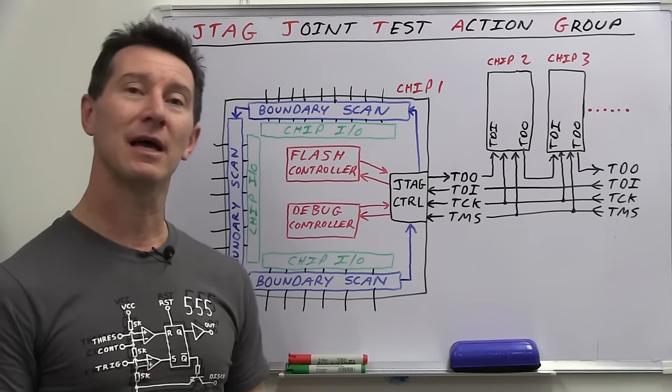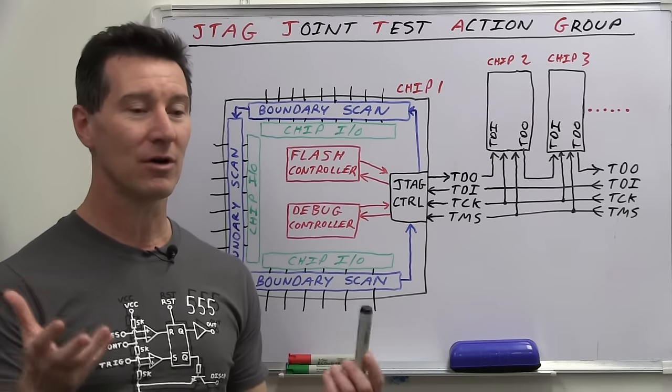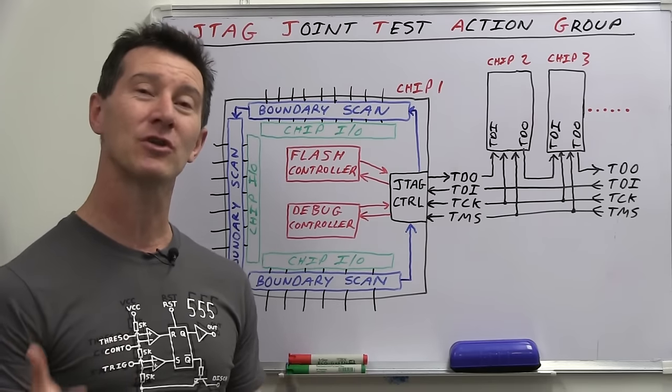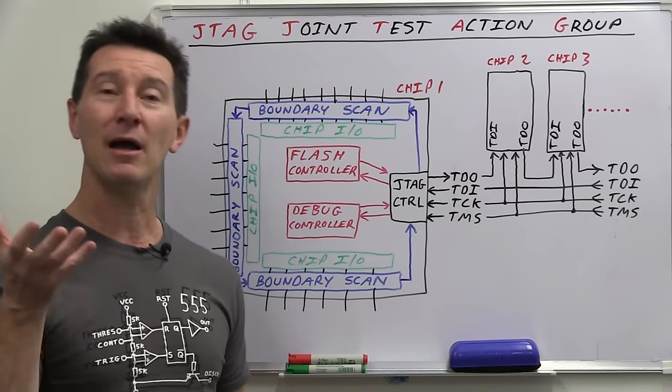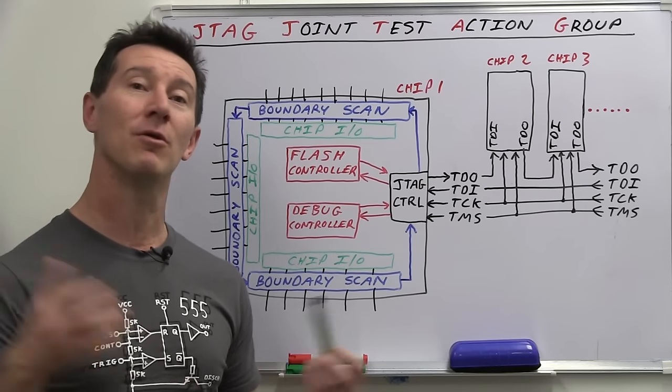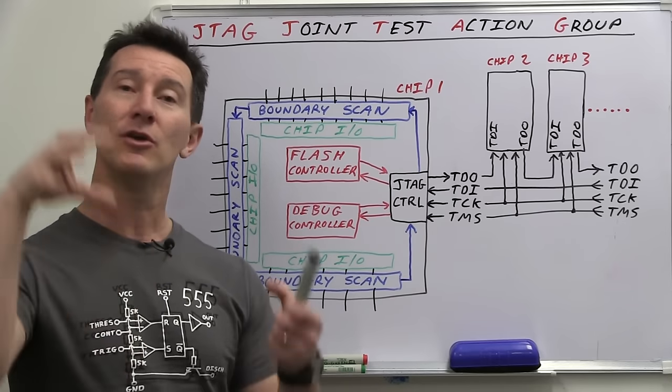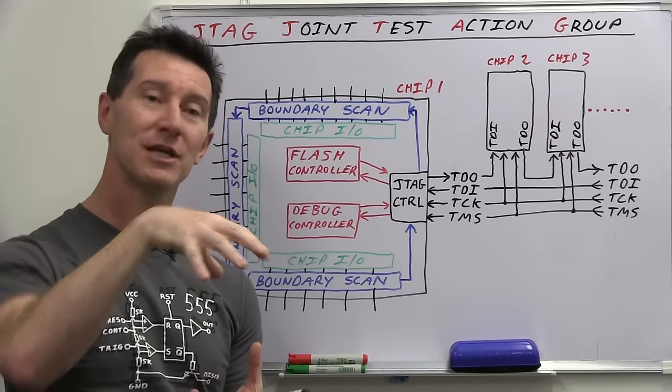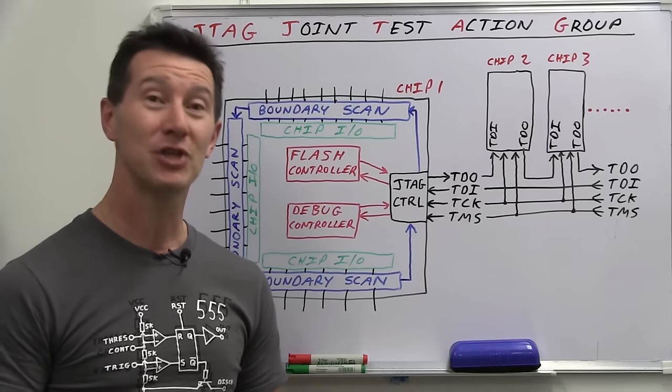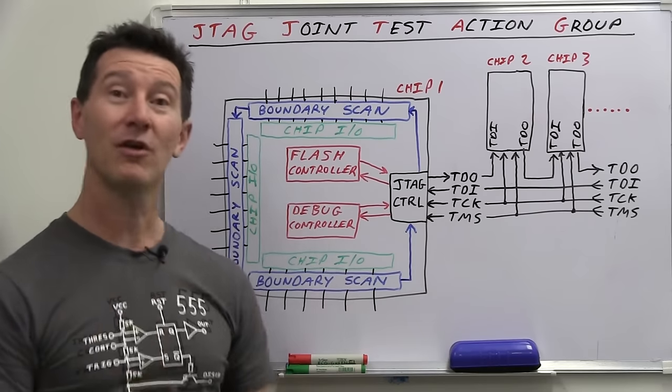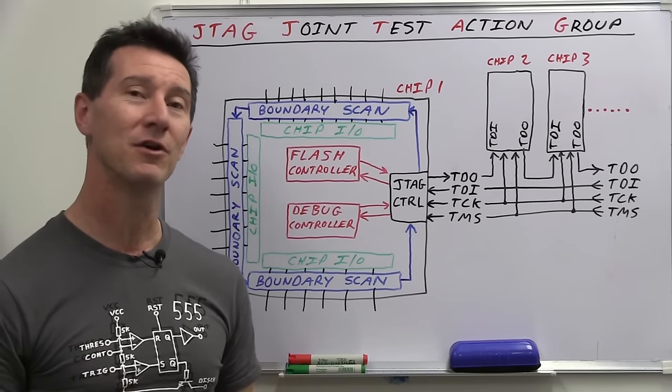JTAG came about in the late 80s when manufacturers started realizing that they were having a lot of trouble testing assembled PCBs. Packages were getting more dense, moving towards packages like BGA where the balls are on the bottom of the device. You can't use a traditional bed of nails tester to come down. If you've got a 500 pin chip, that's a lot of test pins to come down and test your assembled PCB. It was getting very difficult.